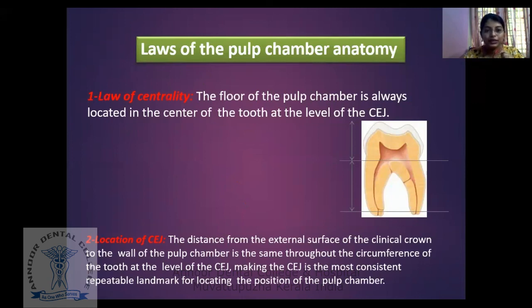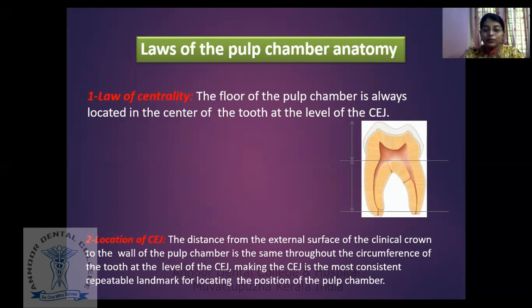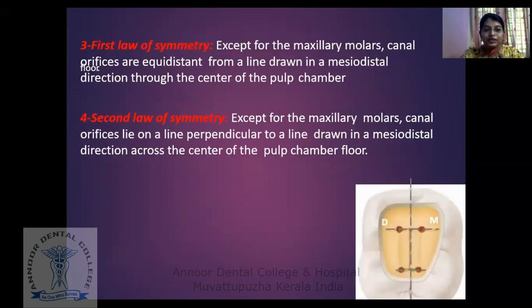Coming to the laws of pulp chamber anatomy. The first is the law of centrality: the floor of the pulp chamber is always located in the center of the tooth at the level of the CEJ. The law of CEJ location states that the distance from the external surface of the clinical crown to the wall of the pulp chamber is the same throughout the circumference of the tooth at the level of the CEJ, making the CEJ the most consistent landmark for locating the pulp chamber. The first law of symmetry: except for the maxillary molars, canal orifices are equidistant from a line drawn in a mesiodistal direction through the center of the pulp chamber.